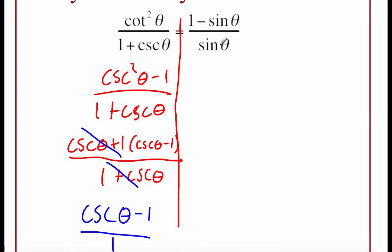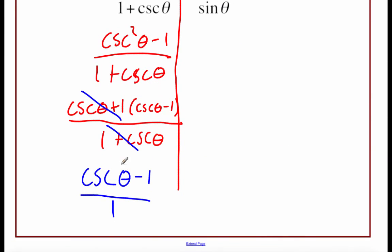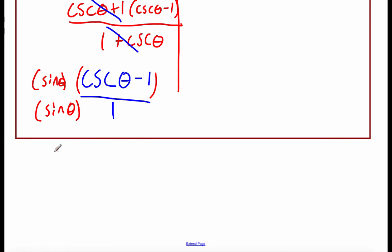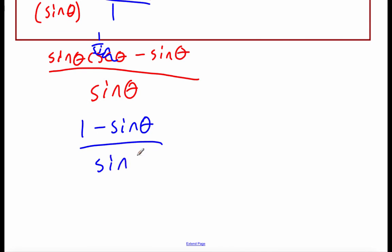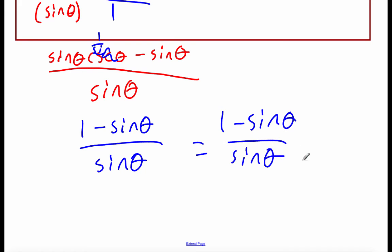So now we've got cosecant of theta minus 1 over 1. Since we need a sine on the bottom, I'm going to multiply top and bottom by sine of theta. Distributing on top: sine times cosecant is sine of theta times cosecant of theta, and sine times negative 1 is minus sine of theta. On the bottom we get sine of theta. Since cosecant is 1 over sine, sine times 1 over sine is just 1 — so we end up with 1 minus sine of theta on top over sine of theta on the bottom. That matches what we were looking for, so we're all done.